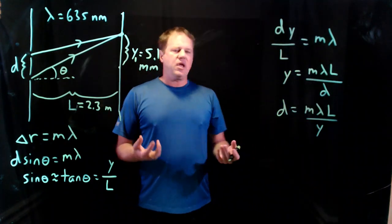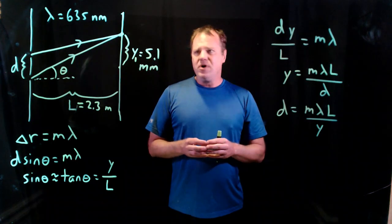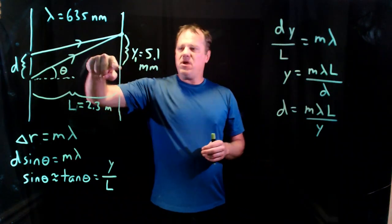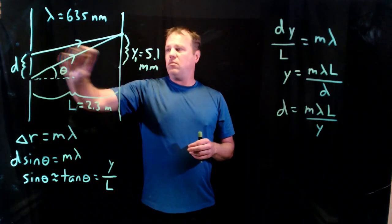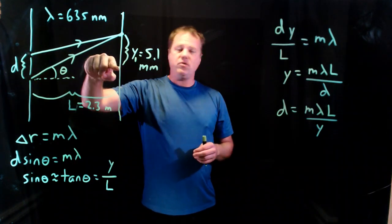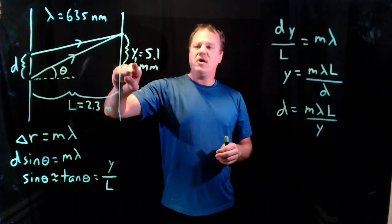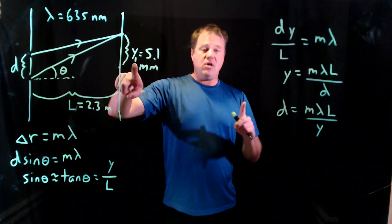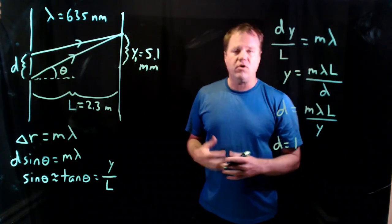So as usual, a lot of times in these interference problems we have to be careful about m. You know, what is m? Well, m equals 0 corresponds to this location directly across from the midpoint between the two apertures, and then if we measure to the first bright spot, that would correspond to m equals 1.